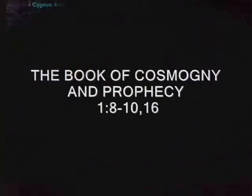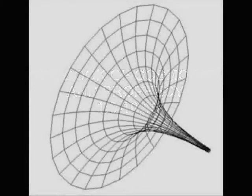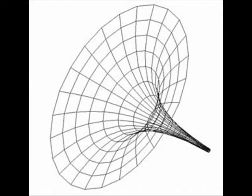Now in the book of cosmogony and prophecy, chapter 1, verses 8-10 and verse 16, it gives a general breakdown of a vortex as it states: Verse 8 - The greater diameter of the vortex is east and west, the lesser diameter north and south, with an inclination and escalation relatively like the earth.